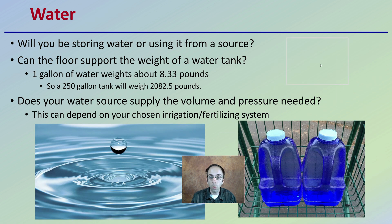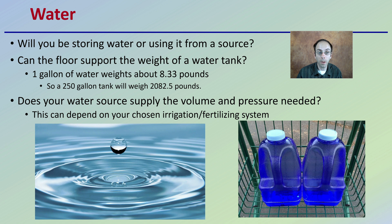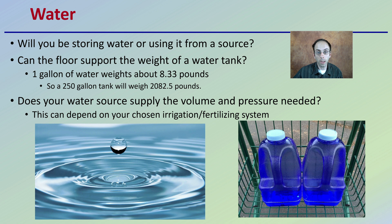Then there is water. Will you be using stored water or using it directly out of a source? If you're using stored water, can the floor support the weight of the water tank you plan on using? Remember, one gallon of water weighs about 8.33 pounds, so a 250-gallon water tank will weigh 2,082.5 pounds. Does your water source supply the volume and pressure you need? To answer that question, you need to know what irrigation or fertilization system you're using.